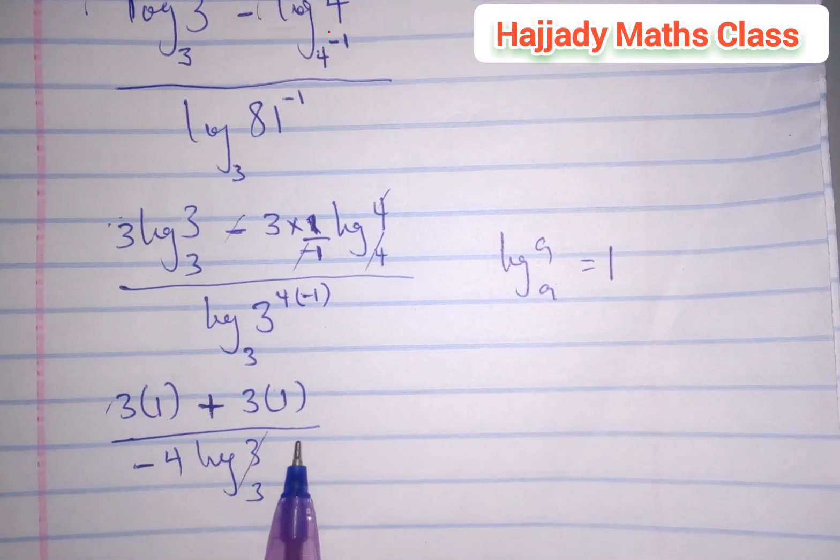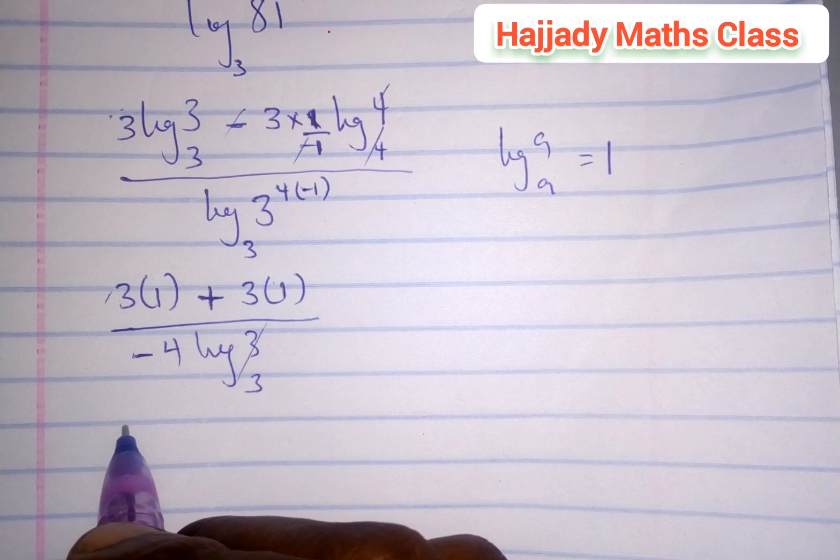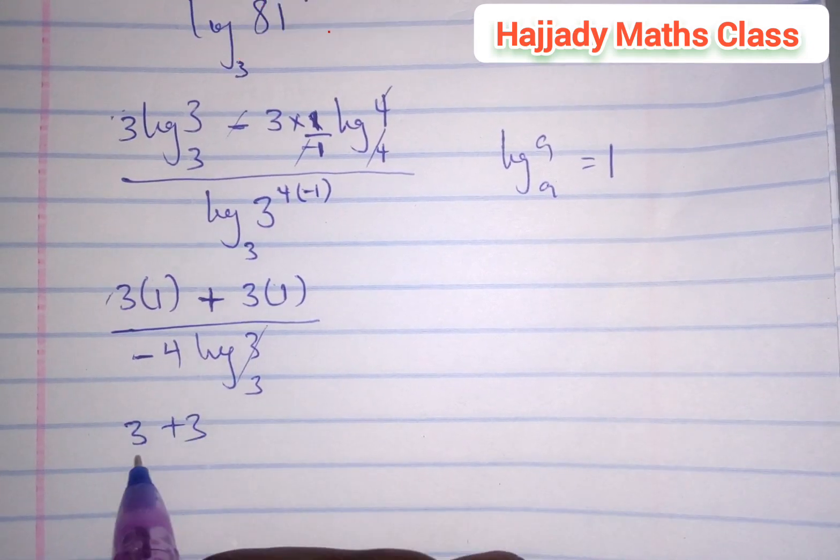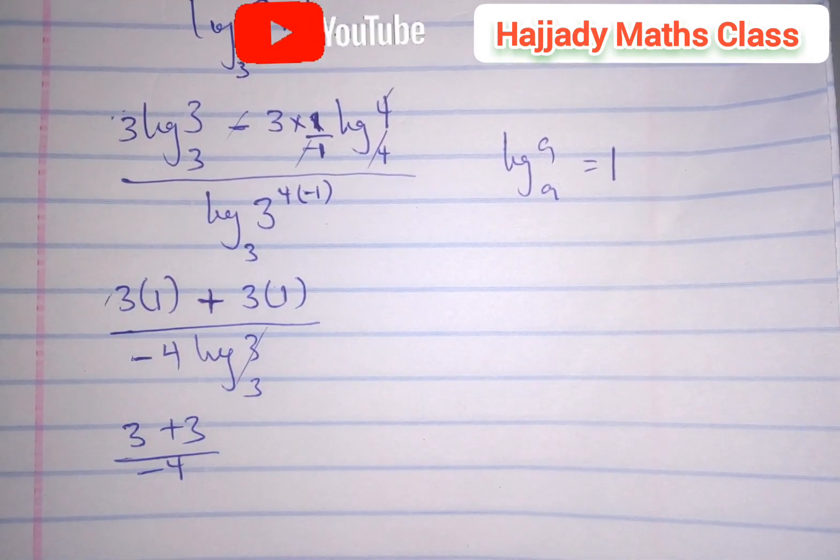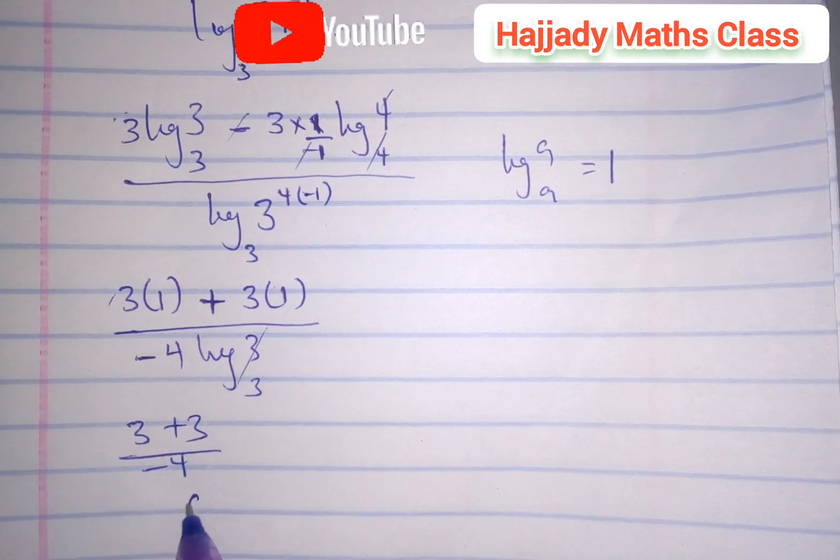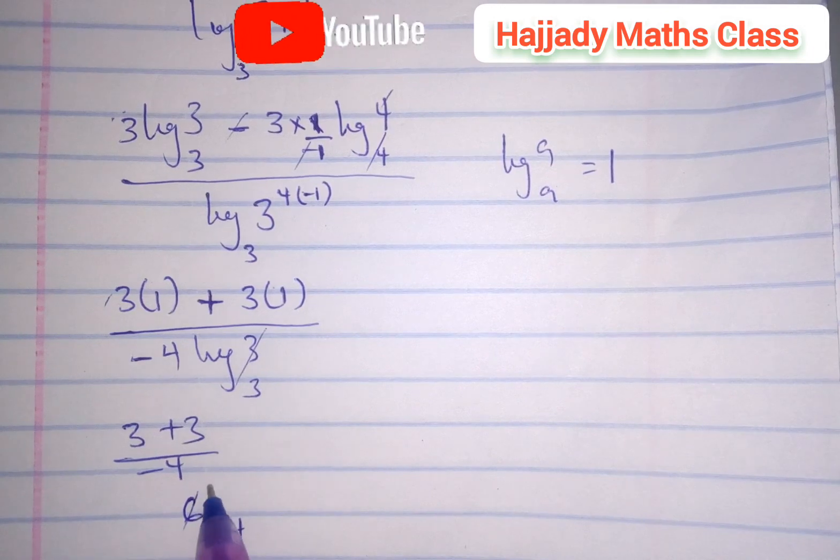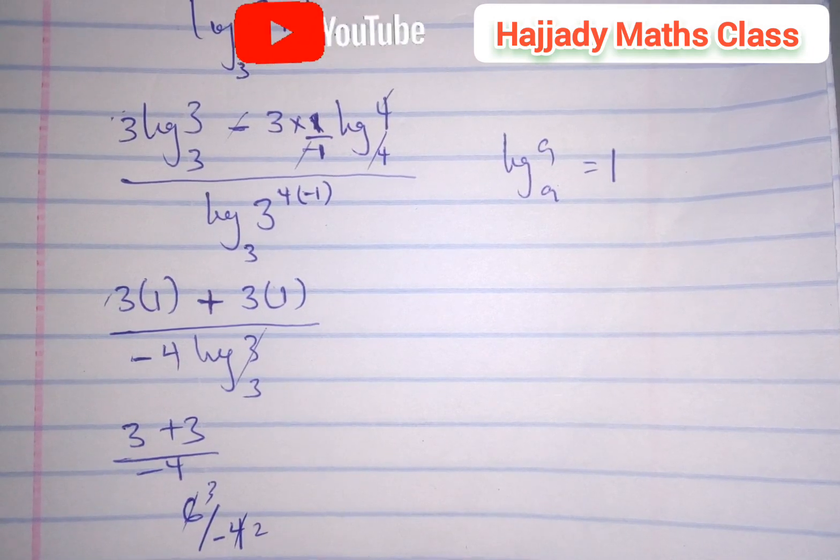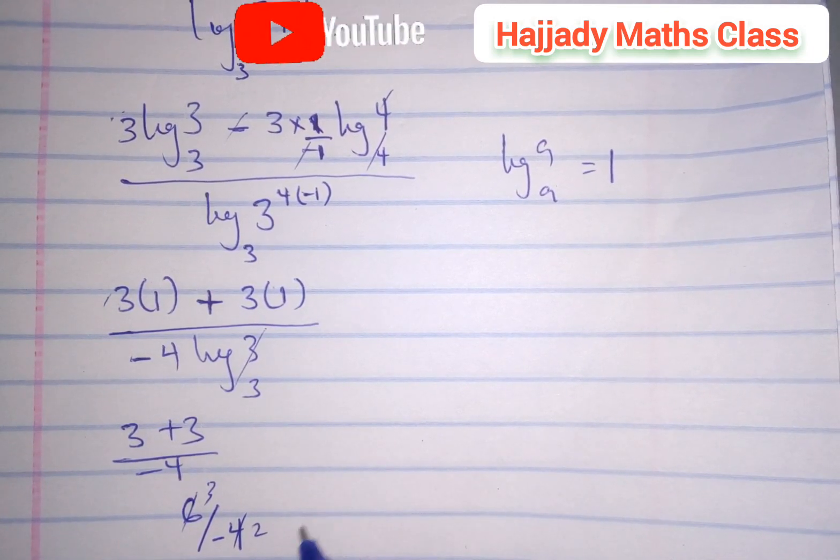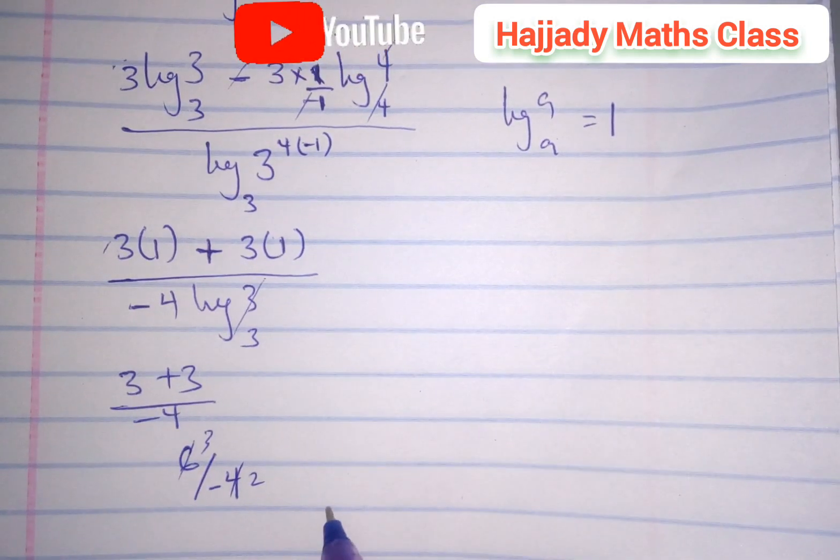So we have 3 plus 3, all over minus 4. And finally we have 3 plus 3 gives 6, all over minus 4, which simplifies to minus 3 over 2.